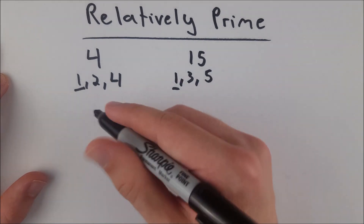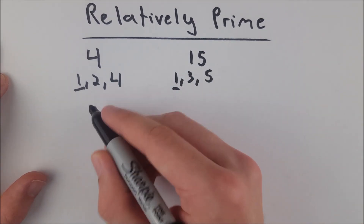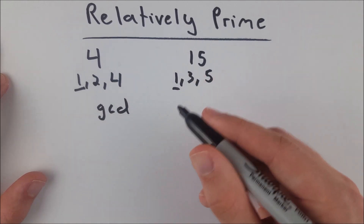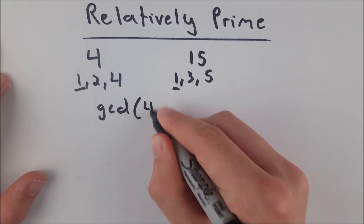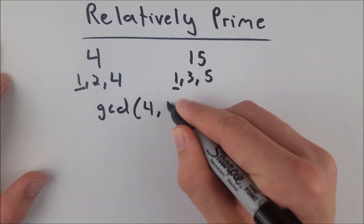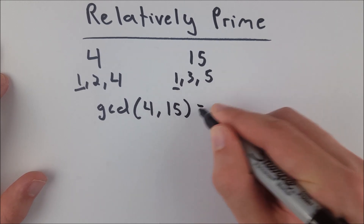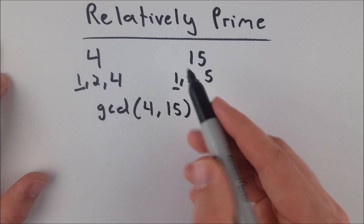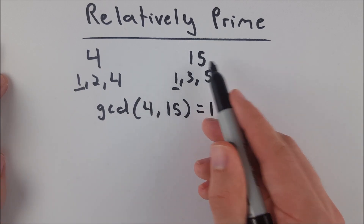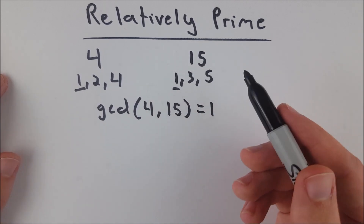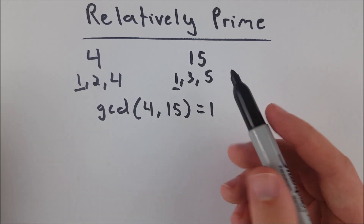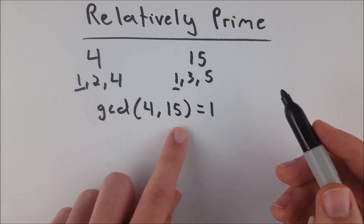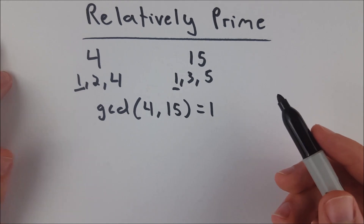This means, among several other things, that you can write it like this: the greatest common divisor — GCD — of four and 15 is one. These are the three numbers that divide four, and these are the three numbers that divide 15. Their greatest common divisor, the largest number that divides both of them, is one. So the GCD of four and 15 is one.